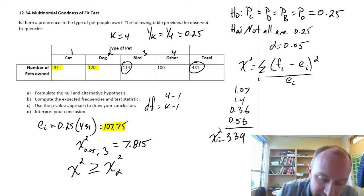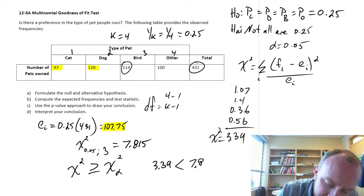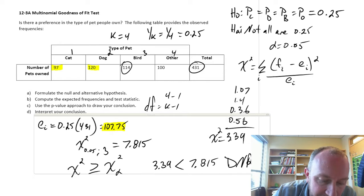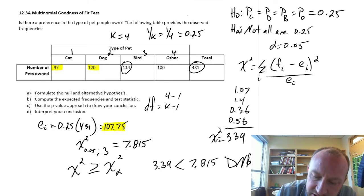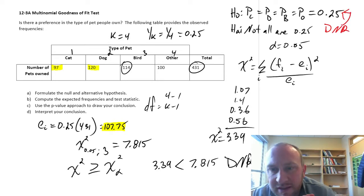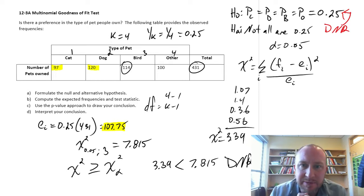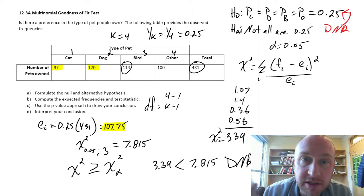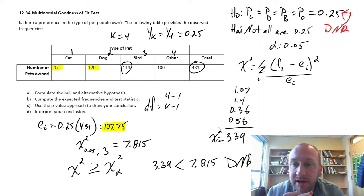In our case, clearly, 3.39 is smaller than 7.815, so we do not reject. We have insufficient evidence to reject this. Do not reject this null hypothesis. We're unable to show that this distribution is not a multinomial probability distribution.